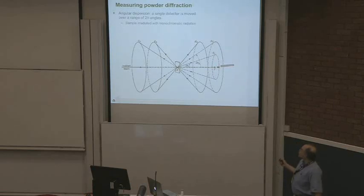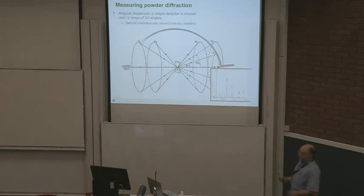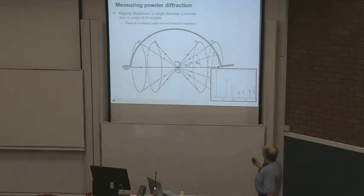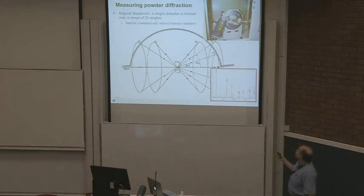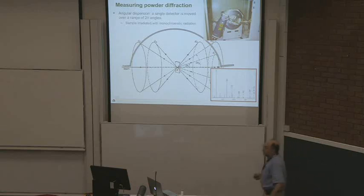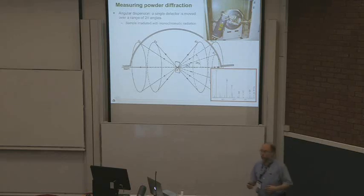So if we take a detector and sweep it along an angle, we will see intensity at specific Bragg angles. This is a relatively simple diffractometer that does that — the Siemens D500 diffractometer — which works by moving the detector up along that angle, with the X-ray tube right there. If that were all we needed to worry about, my job would have been a lot simpler.